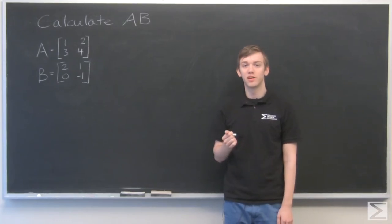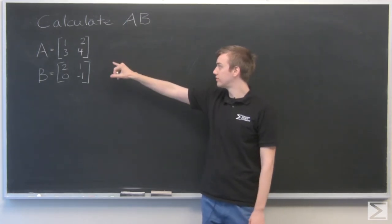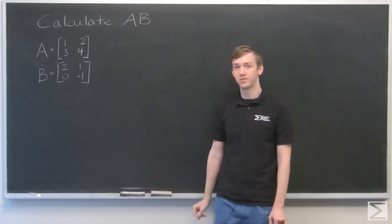For this problem, we're required to multiply two matrices. We want to calculate AB, where A is [1, 2; 3, 4] and B is [2, 1; 0, -1].